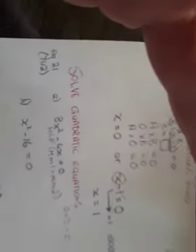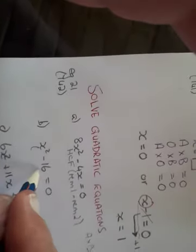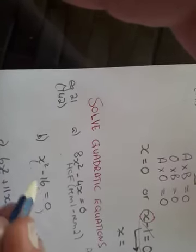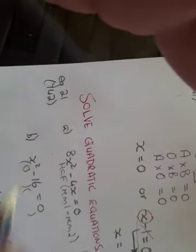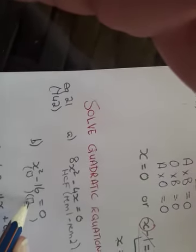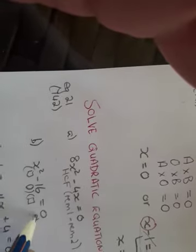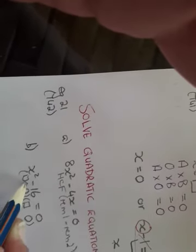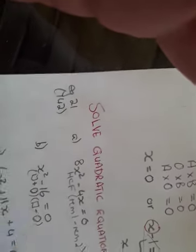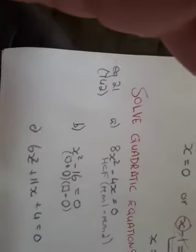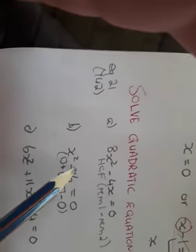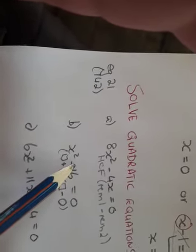One bracket is a plus and one bracket is a minus. So you must simply factorize the difference between two squares.